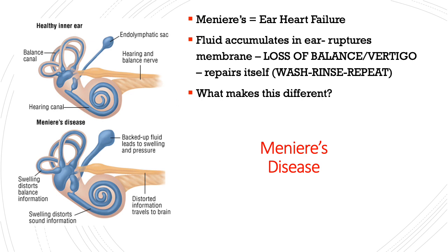Patients also have a transient loss of hearing when the fluid is building up. There's a glycerol test that can help identify Meniere's disease — glycerol helps pull fluid from where it shouldn't be. If you give a patient glycerol during an acute attack and their hearing improves, it's likely Meniere's disease because the fluid accumulation has been reduced. Meniere's tends to occur in middle age, whereas otosclerosis is the most common cause of hearing loss in young people.